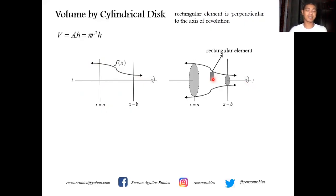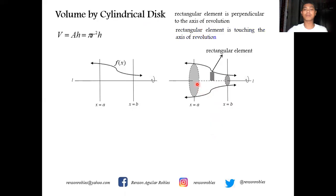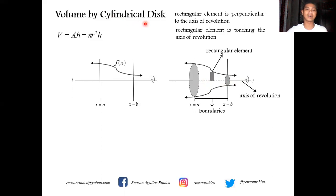When do we use the cylindrical disk method? Two criteria must be met. First, the rectangular element must be perpendicular to the axis of revolution. Second, the axis of revolution is one of the boundaries — that is, the element is touching the axis of revolution. The boundaries are always parallel to the element, and the element is perpendicular to the axis of revolution.